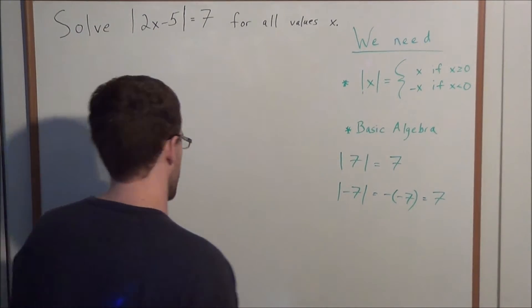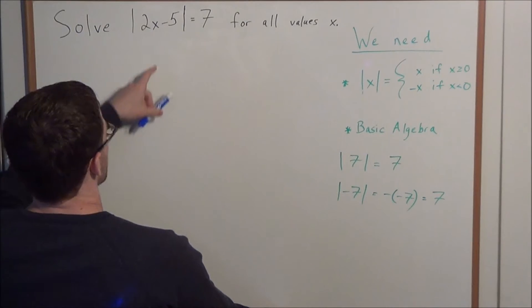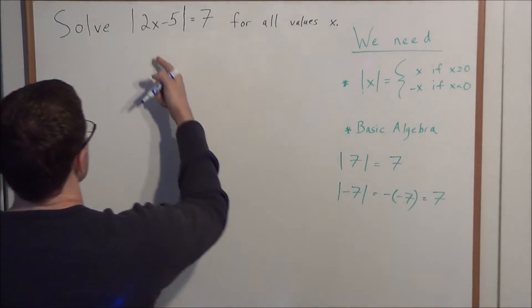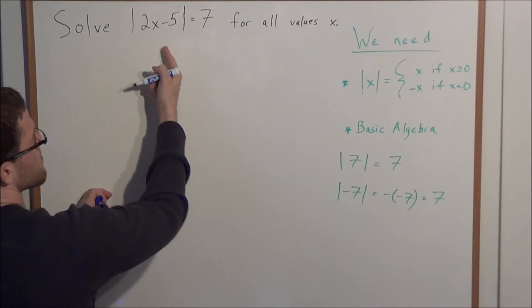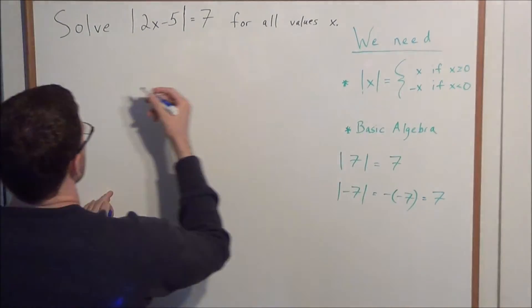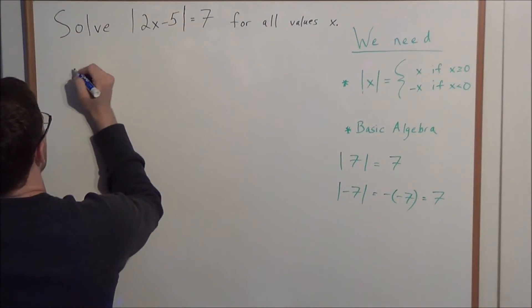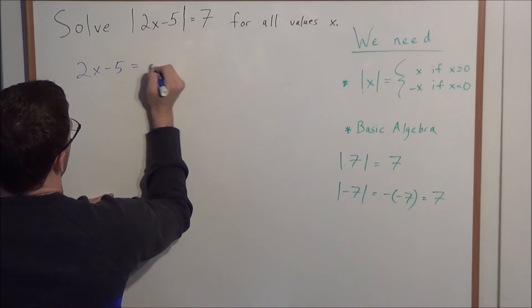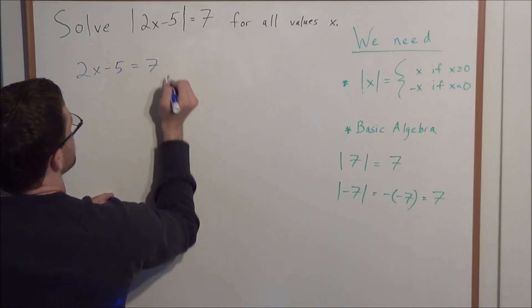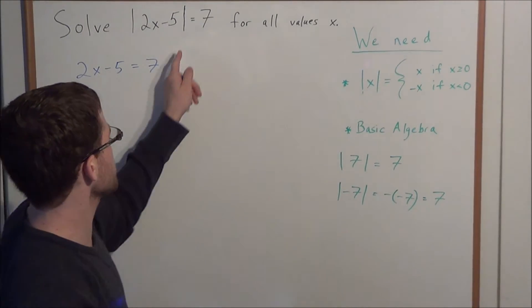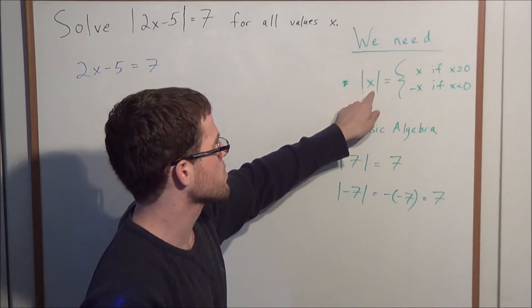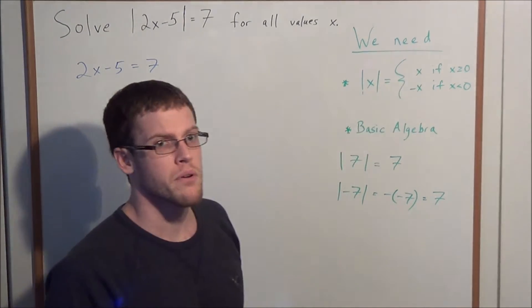So now looking at this example here, let's go ahead and apply this definition to the problem here. We have two cases. The input, 2x minus 5, could be greater than or equal to 0. So in case 1, we have 2x minus 5 equals 7. Keeping in mind, if the input is greater than or equal to 0, then the absolute value of that input is simply the input.